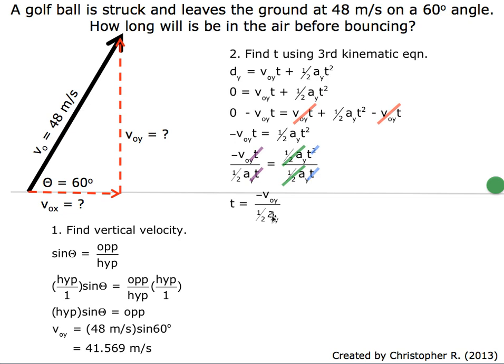That's t equals negative the initial vertical velocity divided by half the acceleration due to gravity.